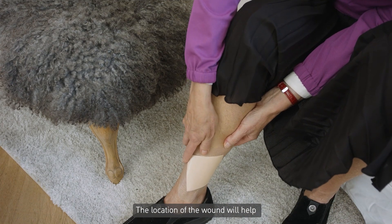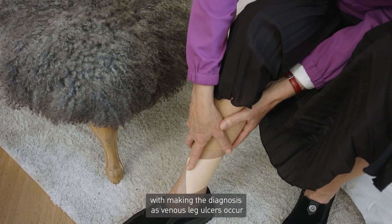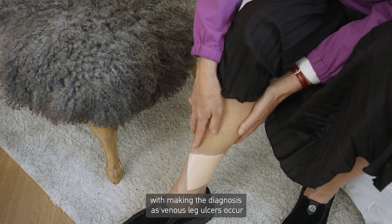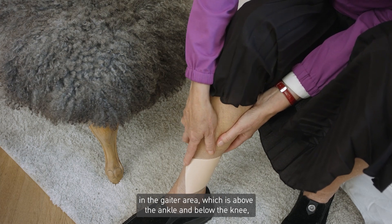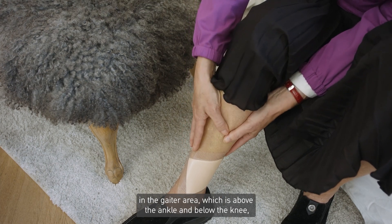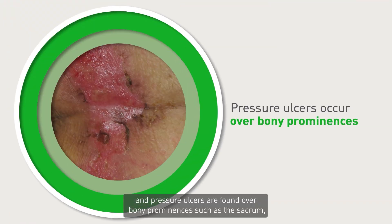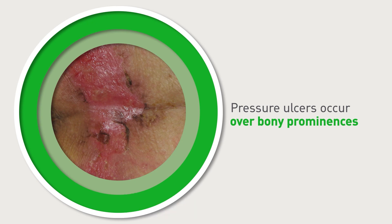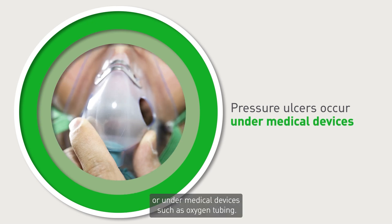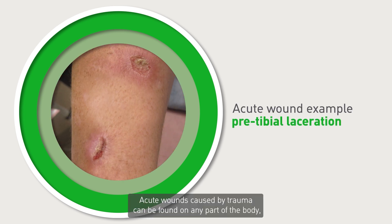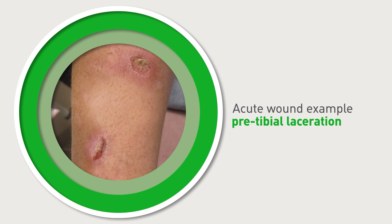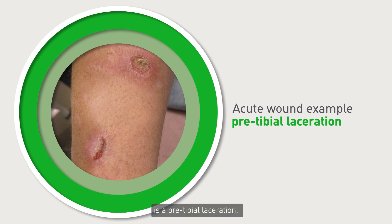The location of the wound will help with making the diagnosis, as venous leg ulcers occur in the gaiter area, which is above the ankle and below the knee, and pressure ulcers are found over bony prominences such as the sacrum, or under medical devices such as oxygen tubing. Acute wounds caused by trauma can be found on any part of the body; an example on the lower limb is a pre-tibial laceration.